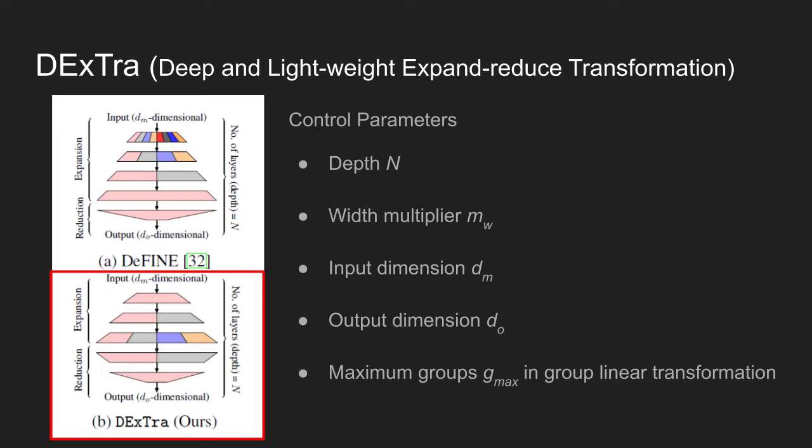The use of group local transformation blocks is more efficient than linear transformations because the group local transformation block lets the model learn local representations by deriving the output from a specific part of the input. To learn global representations, DExTra shares information between different groups in the group linear transformation using feature shuffling. Also, compared to the existing DeFINE model shown in A, DExTra uses more groups in group linear transformations to learn wider representations with fewer parameters.